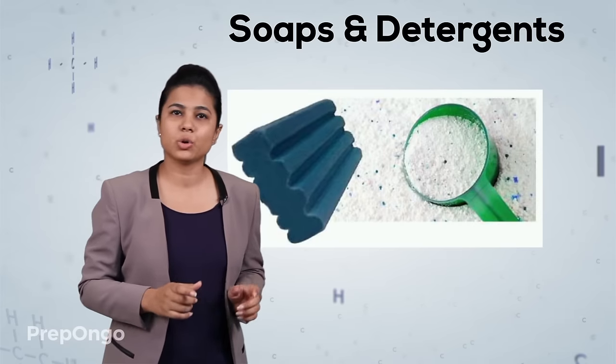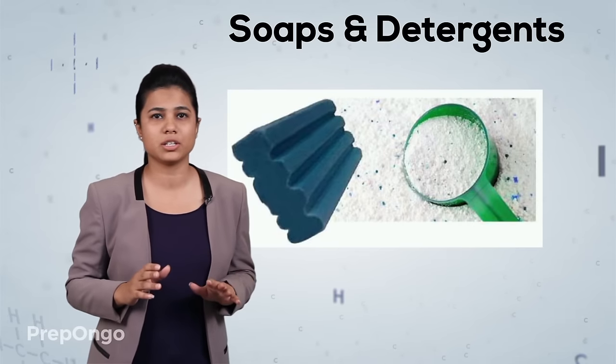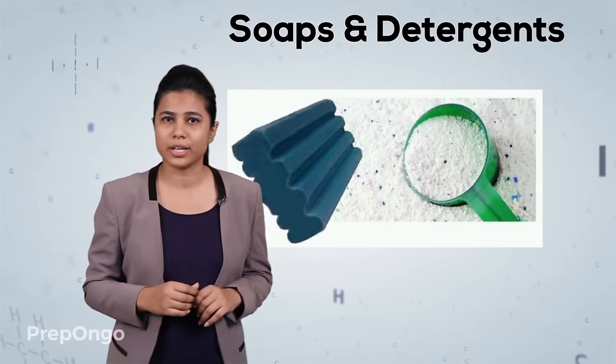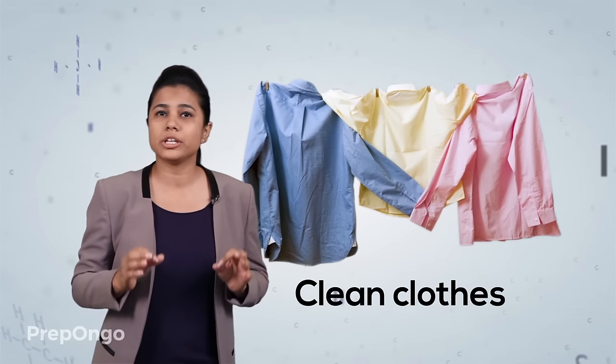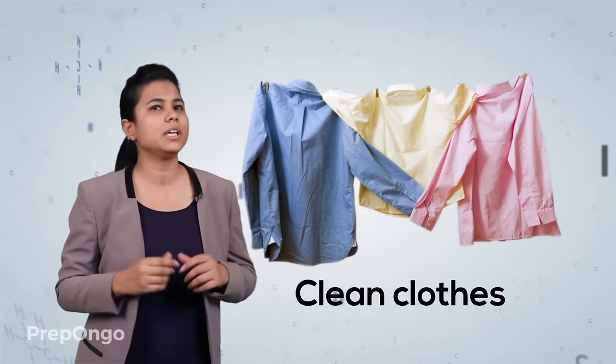A bar of soap and a scoop of detergent has a very typical structure and they work in a very interesting way. I'm sure hardly any of us think how they work. All we are bothered about is how properly our clothes are clean.